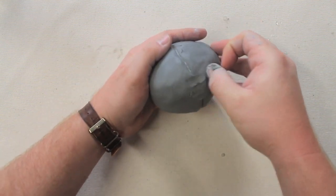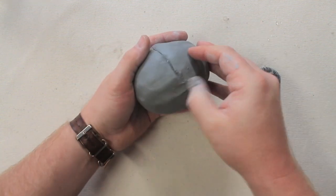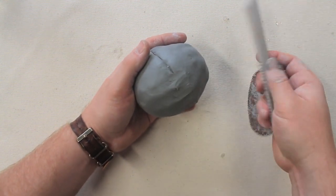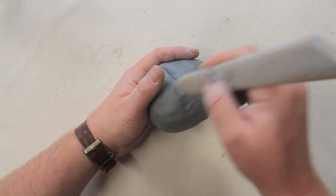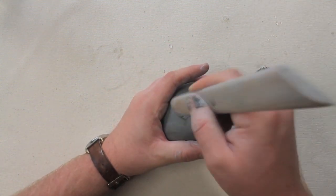The final step can be very satisfying. We're going to seal the bond together using either our thumb or any type of blending tool by scraping clay across the joint.